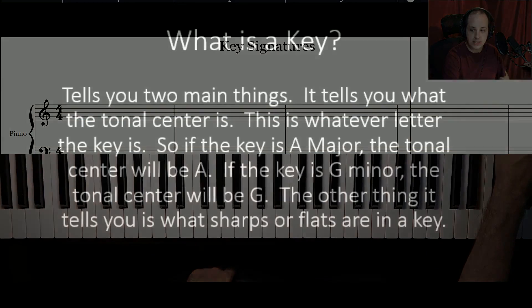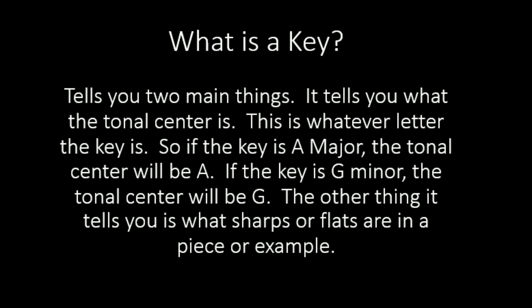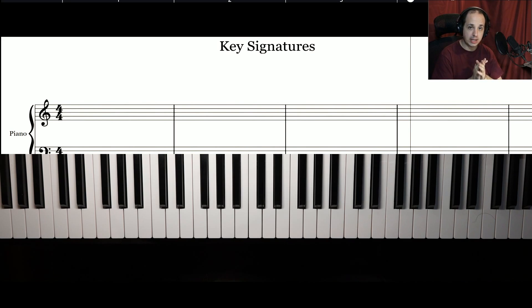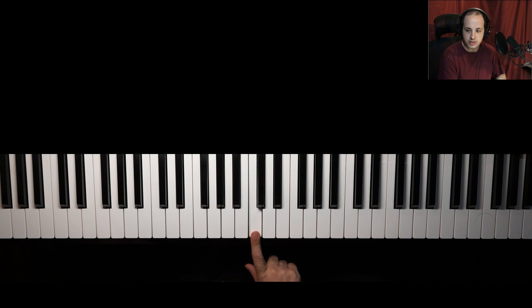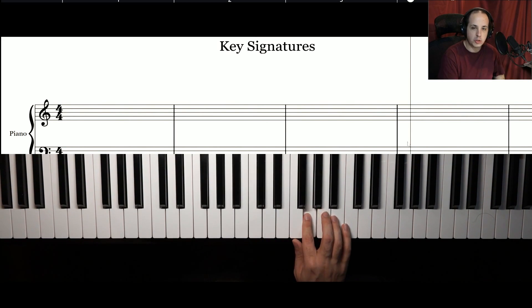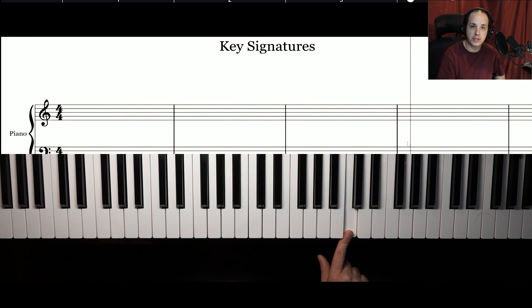The second thing a key tells you is what sharps or flats are in that piece. Say we have the key of C. The key of C has zero sharps and zero flats. It also tells you the tonal center is C, so you begin and end on that note, playing all the notes in between that aren't sharped or flat — all the white keys.